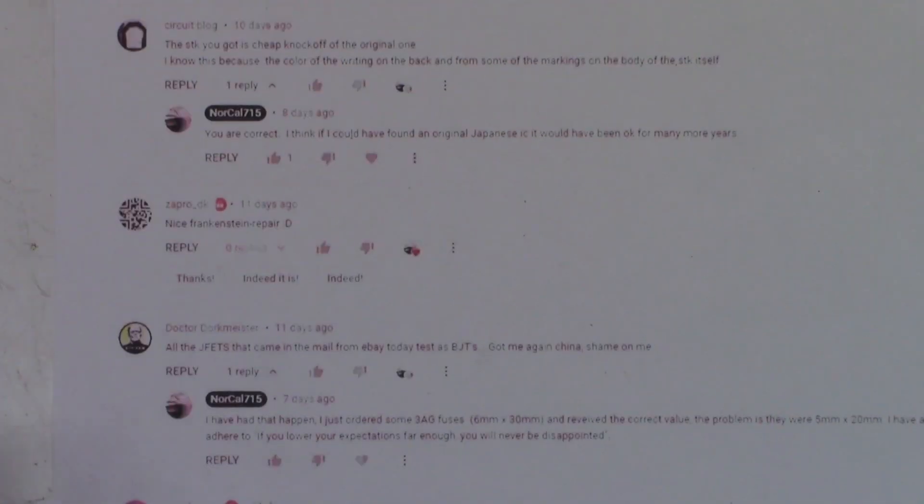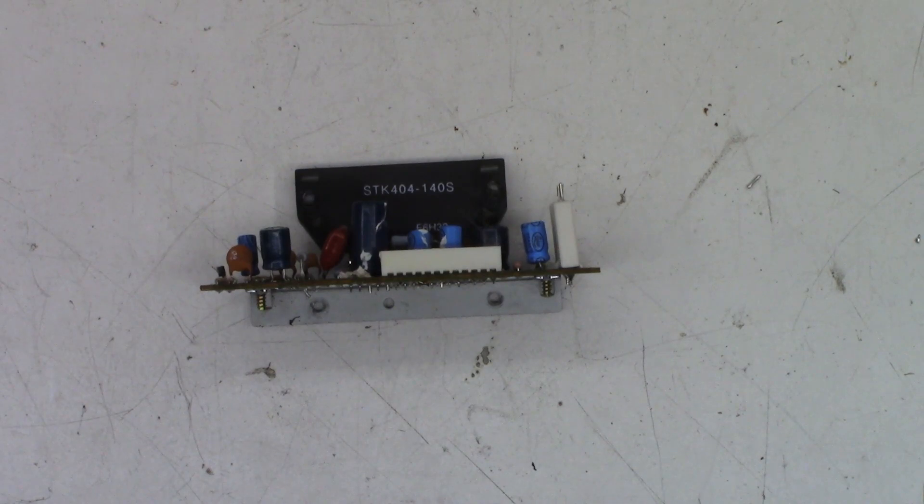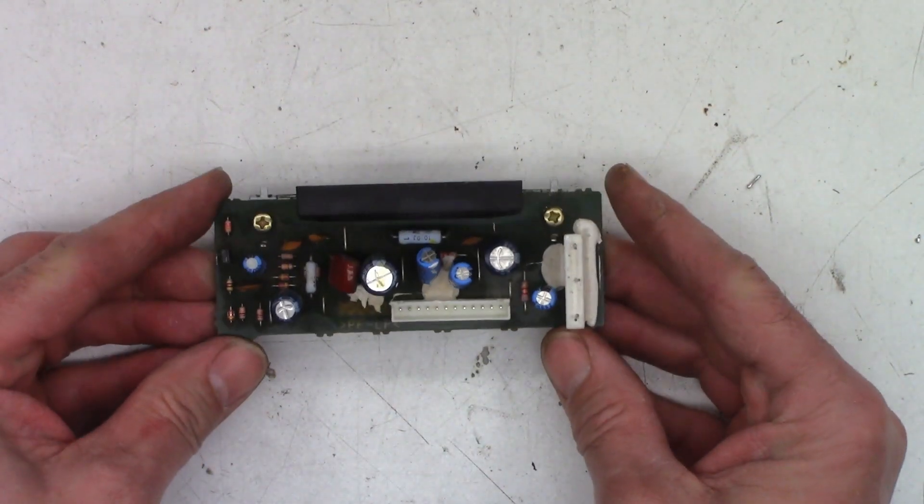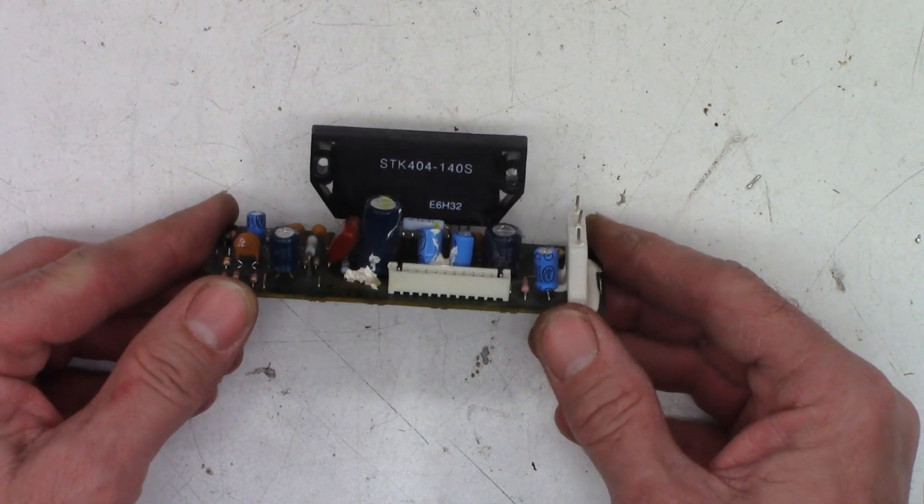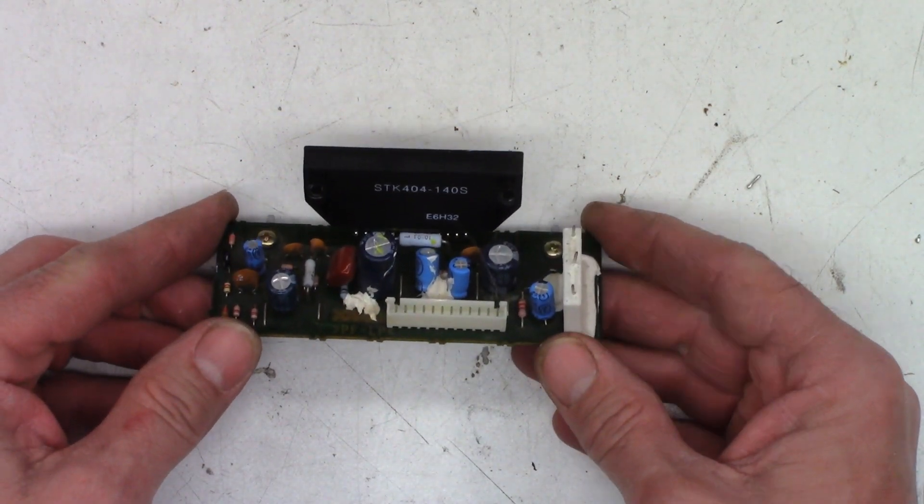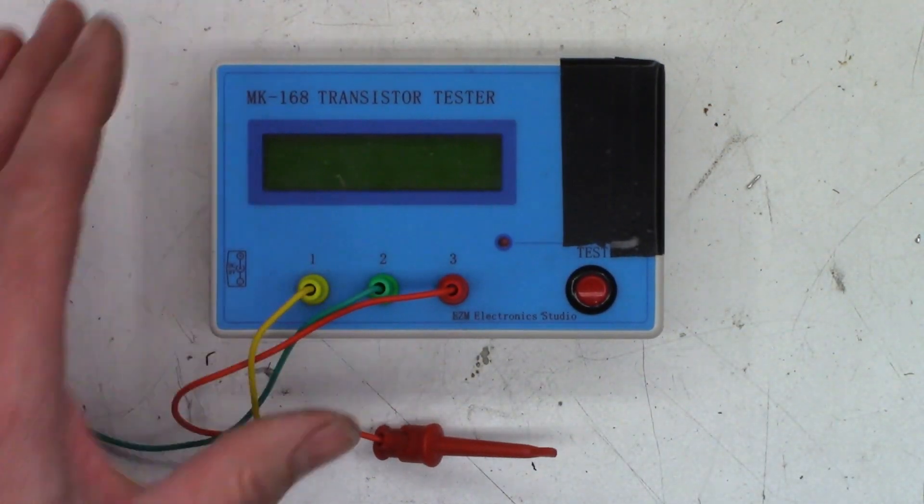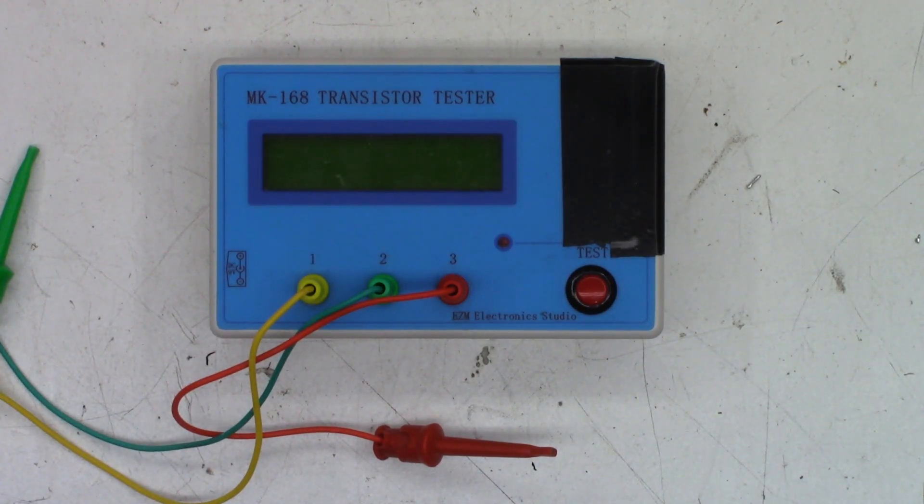Circuit blog said: the SDK you got is a cheap knockoff of the original one. I know this because of the color of the writing on the back and from some of the markings on the body of the SDK itself. I replied: you are correct. I think if I could have found an original Japanese IC it would have been okay for many more years. I still have it with all the capacitors and resistors, so let's go ahead and pull these things out and use the MK 168 which will show V loss on capacitors.